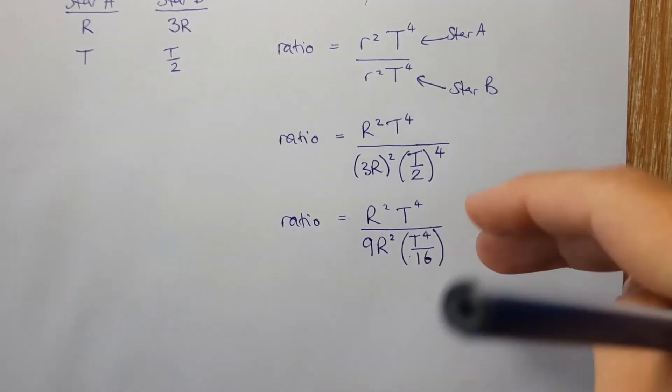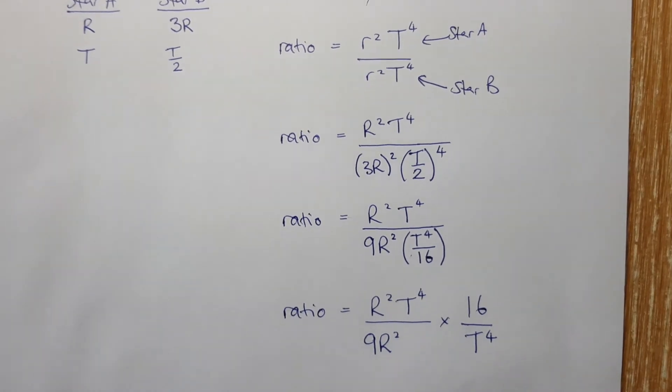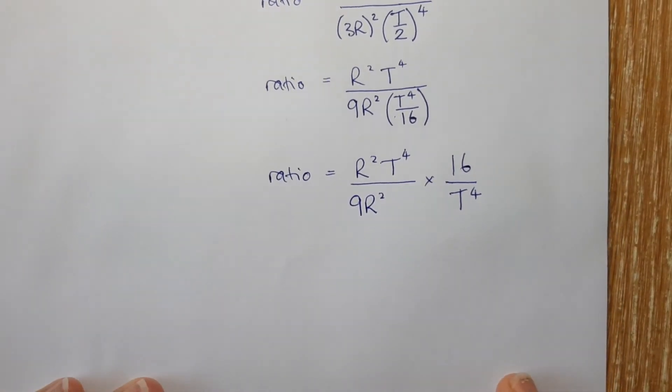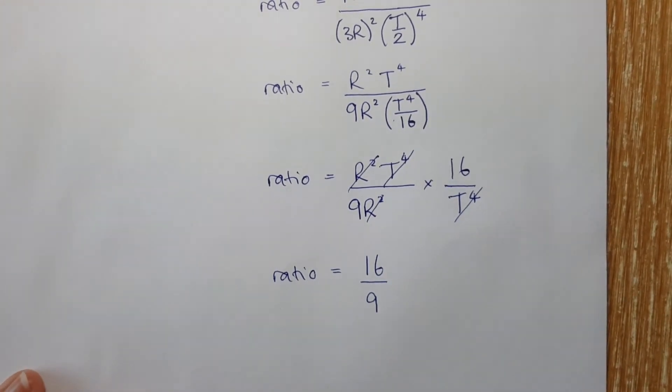And then if you divide by a fraction, that's the same as multiplying by the fraction upside down. And now all we have to do is a bit more cancelling to find that our ratio is 16 over nine.